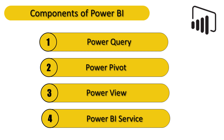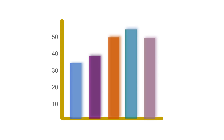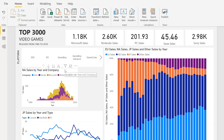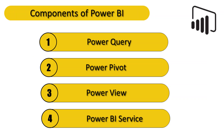After modeling the data and finding the relationships, the next step is to visualize it — that is, represent the data in a visual format that can be understood by everyone. For this purpose, the third component of Power BI, Power View, is used. It visualizes data in the form of charts, graphs, dashboards, or reports. Power BI offers around 280 types of charts, from simple bar charts and pie charts to donut charts and many more complex types. We can also represent data in a dashboard using dashboard templates.